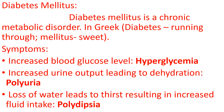Diabetes mellitus is a chronic metabolic disorder. Symptoms include increased blood glucose level, known as hyperglycemia, and increased urine output leading to dehydration, known as polyuria. Loss of water leads to thirst, resulting in increased fluid intake, known as polydipsia.